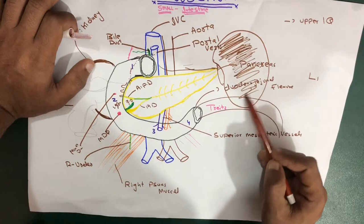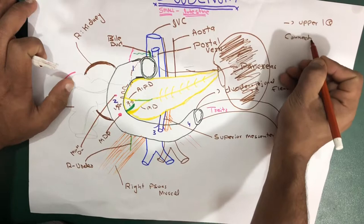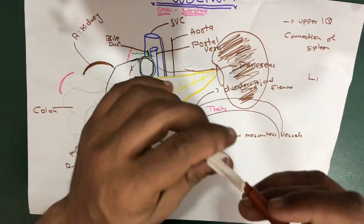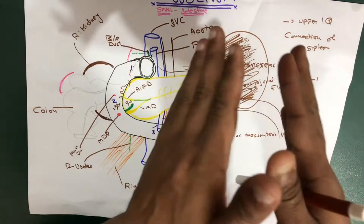Now we'll talk about the connections of the spleen. The spleen is connected to the stomach and to the liver by two ligaments, and those ligaments are made from the peritoneum — from peritoneal folds. Those peritoneal folds join together to form two ligaments.